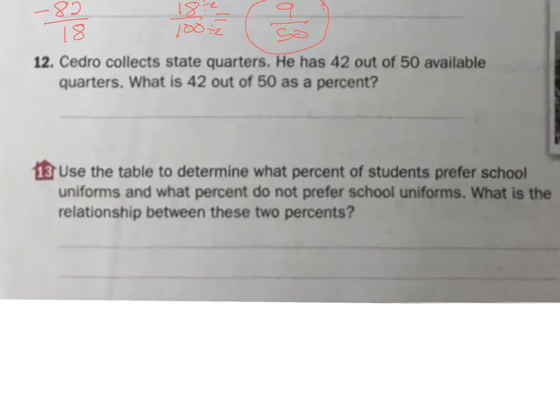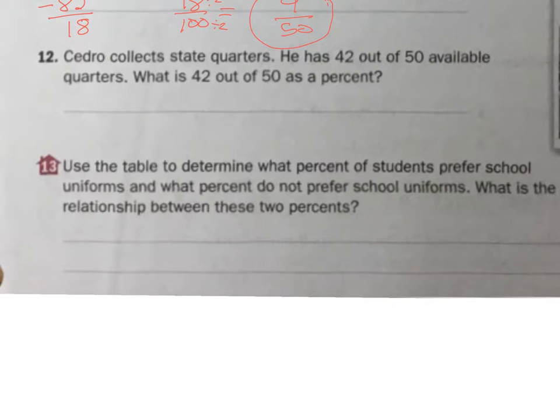Cedro collects state quarters. He has 42 out of 50 available quarters. What is 42 out of 50 as a percent? So 42 out of 50, I want that as a percent. So I'm going to get that to 100 which I know I can do easily. 42 out of 50 times 2, times 2, gets me to 84. 84 out of 100 is 84%. And that's my answer. 84% of the quarters are available to him.